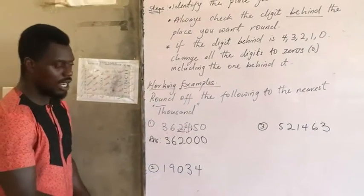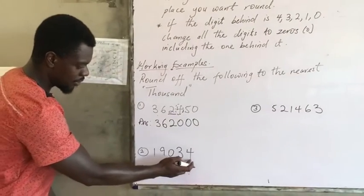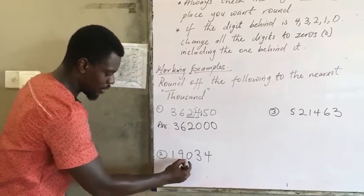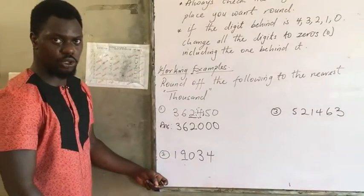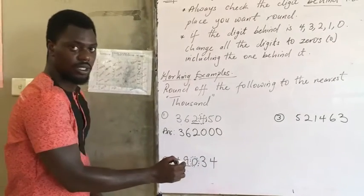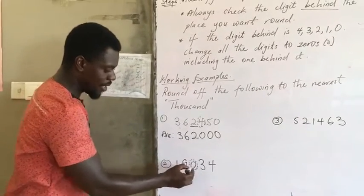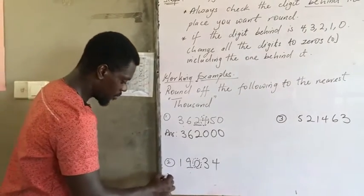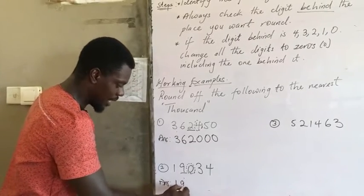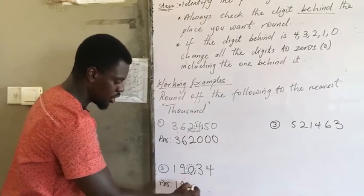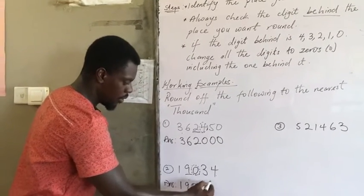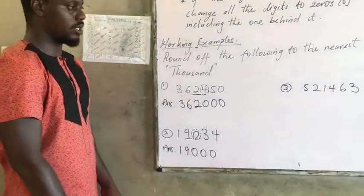Let's look at the second example, also rounding to the nearest thousand. Identify the thousands place: ones, tens, hundreds, thousands. The digit there is nine. Check the digit behind it — it is zero. Since zero falls in the category of zero to four, we keep the nine, and all the digits behind it change to zero. The three changes to zero, and the four changes to zero.